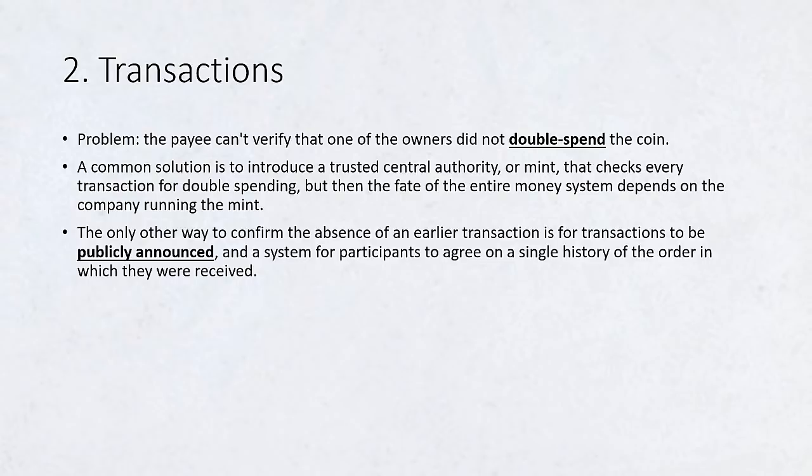To accomplish this without a trusted party, transactions must be publicly announced, and we need a system for participants to agree on a single history of the order in which they were received. The payee needs proof that at the time of each transaction, the majority of nodes agreed it was the first received.